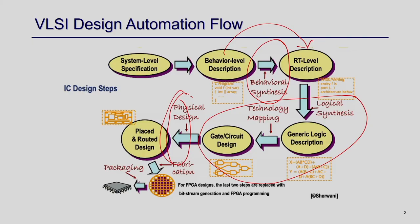Logic synthesis has basically two sub-steps. The first step is representing the RTL design in terms of gate-level design. Then, once that generic gate-level design is realized, we have to represent it in terms of technology mapping — mapping to technology cells. This part is technology-dependent and target-dependent.